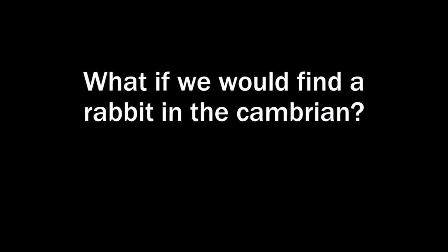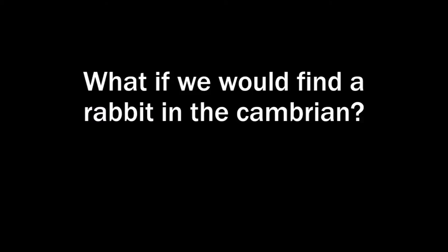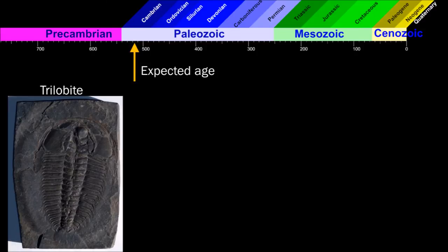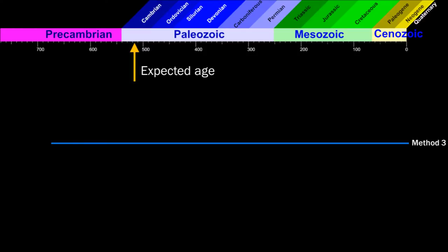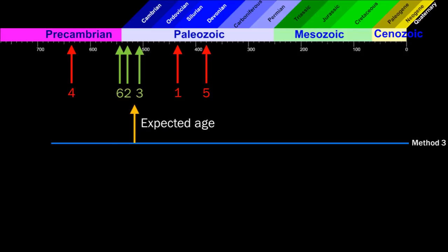But what if we would find it anyway? What would happen? First of all, what makes a layer Cambrian? Is it a dating method? No, actually it's the fossil. The dating methods are there to support the dating of the fossils. Find a trilobite, then it's supposed to be Cambrian. That defines which dating method to apply. Then the dating is done using that method, and some samples will be within the expected range — that supports the age of the fossil.